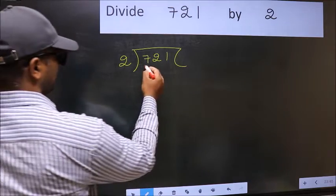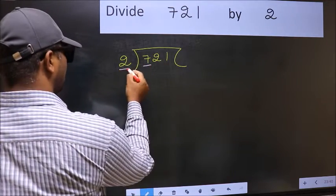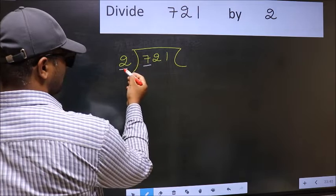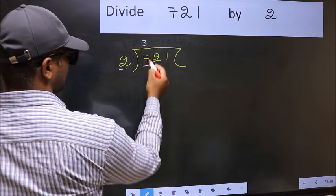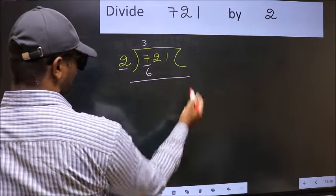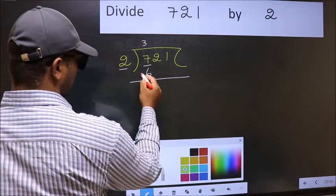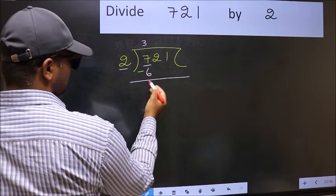Here we have 7 and here 2. A number close to 7 in 2 table is 2, 3 is 6. Now, you should subtract. 7 minus 6, 1.